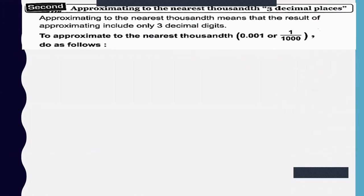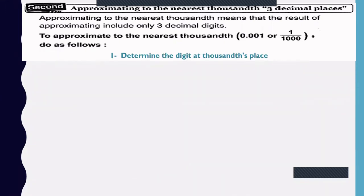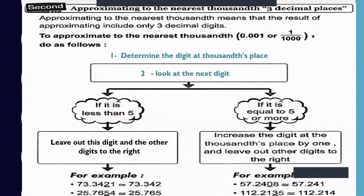Now, approximating to the nearest thousands means three decimal places. The result of approximating includes only three decimal digits. To approximate any number to the nearest thousandths: step one — determine the digit at the thousandths place; step two — look at the next digit.